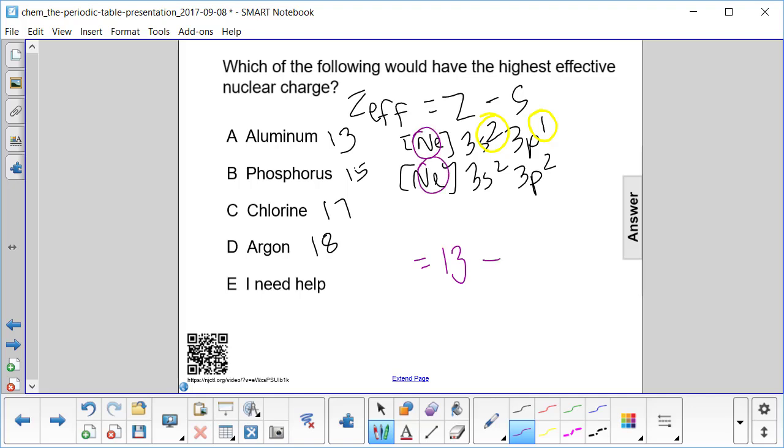Now for all of these, since they have neon as their core, the shielding constant for all of them is going to be 10. So that means the larger the number of protons, the larger the effective nuclear charge. And so in this case, we get D as our answer.